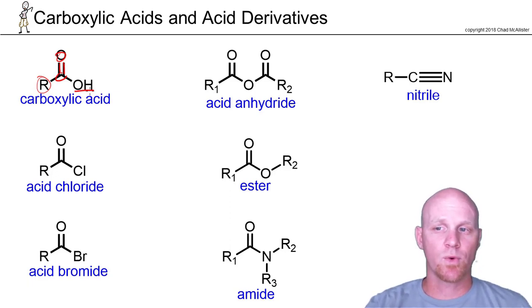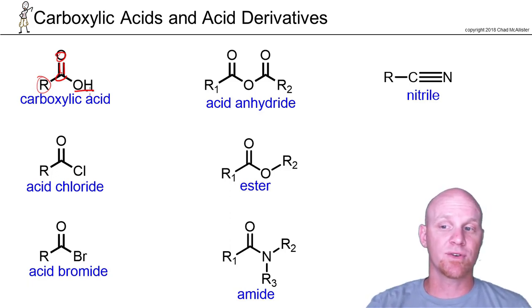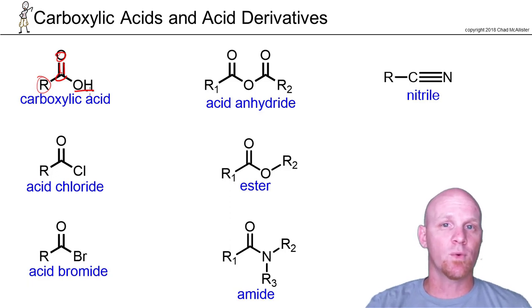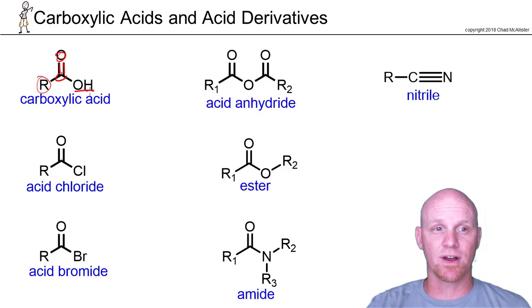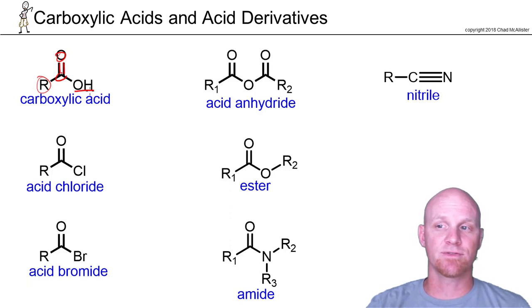The rest are what we call the carboxylic acid derivatives, and you can convert all of them into carboxylic acids, and in one way, shape, or form you can convert a carboxylic acid into any of them. We'll find out we can interconvert all of them — maybe not directly, maybe sometimes directly — with each other. They're carboxylic acid derivatives in that sense because we can turn them into carboxylic acids and vice versa.